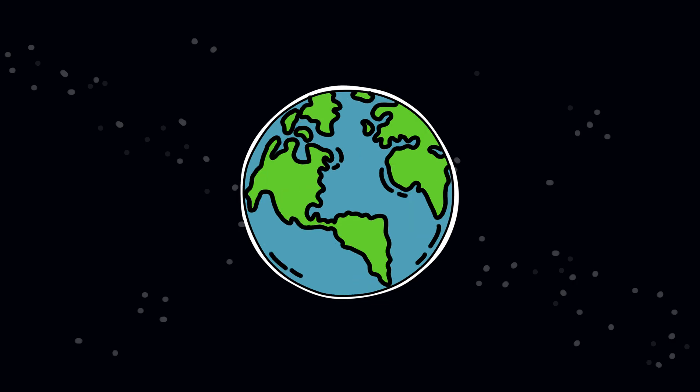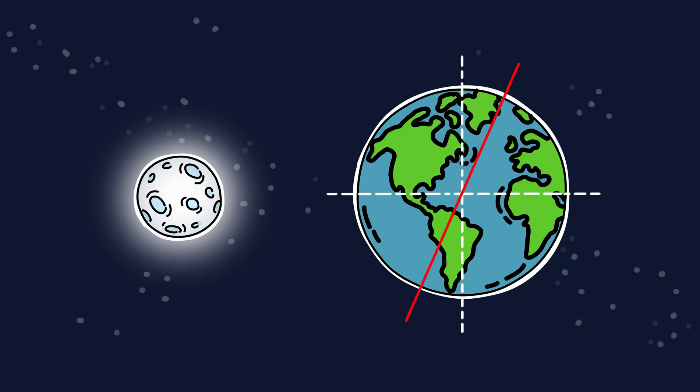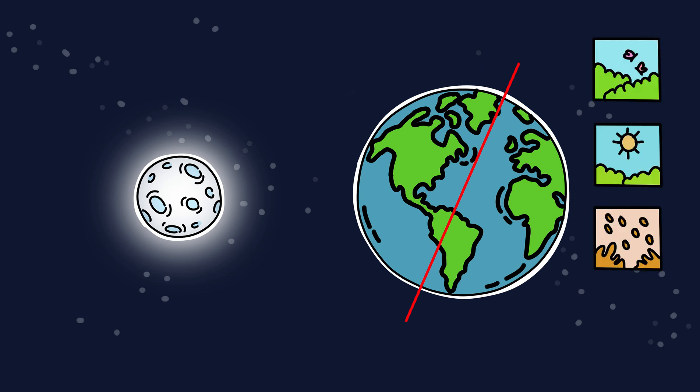Then there's Earth's tilt. The moon keeps our planet tilted just right. Right now, we're tilted at a comfy 23.5 degrees. That gives us seasons and a stable climate.